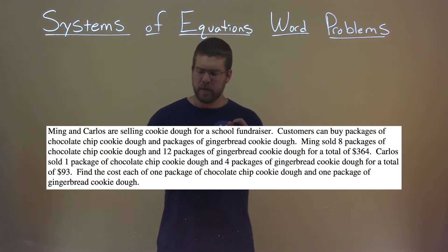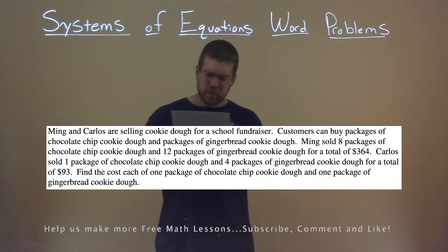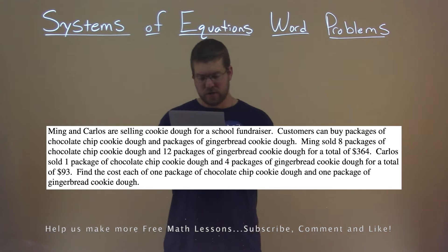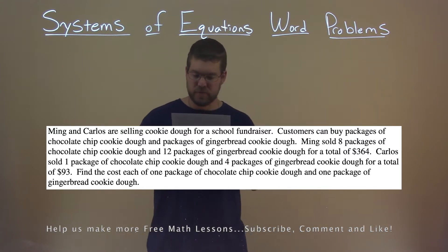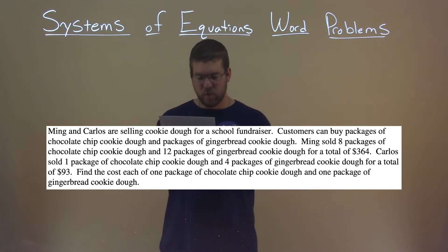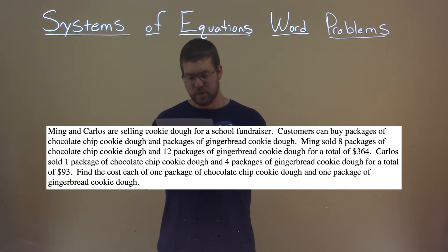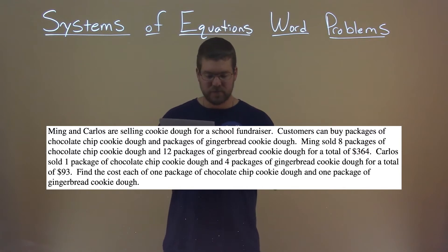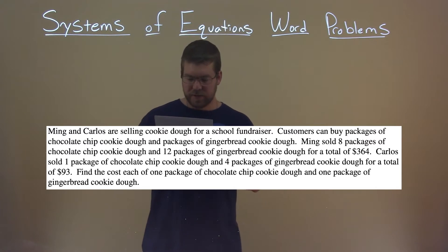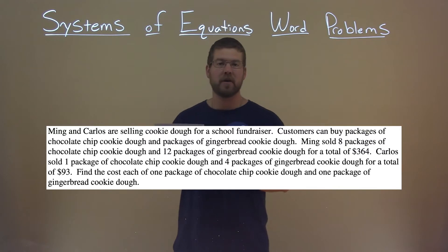We're given this problem right here. Ming and Carlos are selling cookie dough for a school fundraiser. Customers can buy packages of chocolate chip cookie dough and packages of gingerbread cookie dough. Ming sold 8 packages of chocolate chip cookie dough and 12 packages of gingerbread cookie dough for a total of $364. Carlos sold 1 package of chocolate chip cookie dough and 4 packages of gingerbread cookie dough for a total of $93. Find the cost of each package.